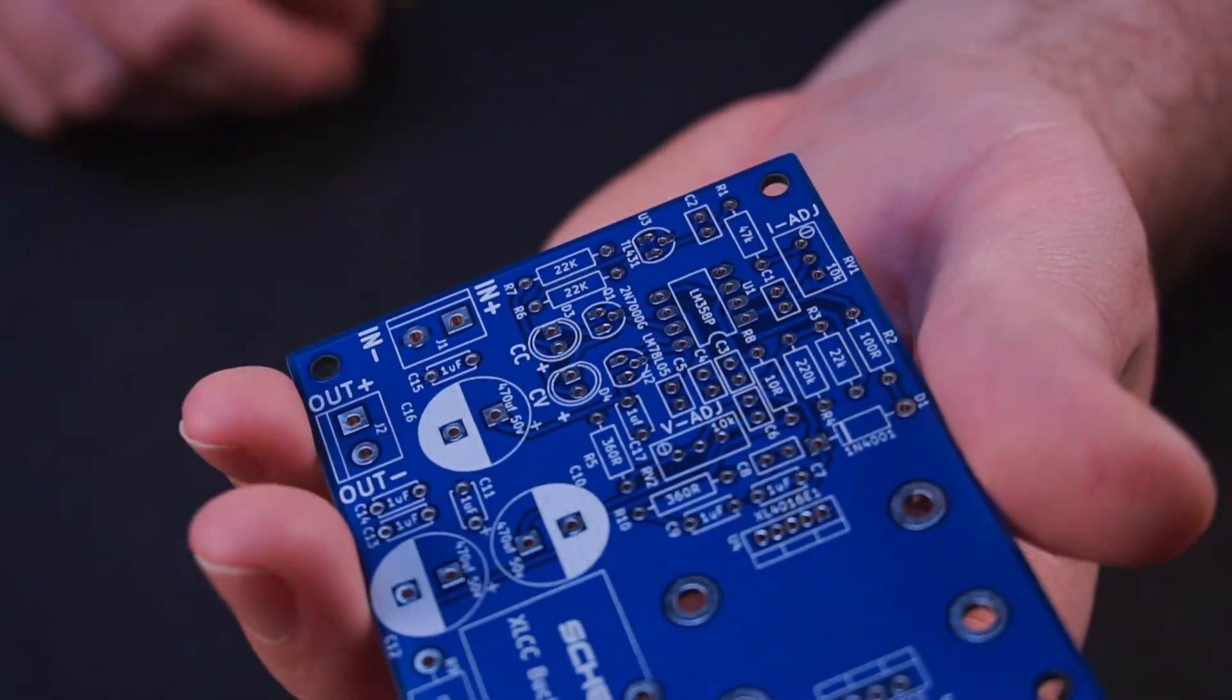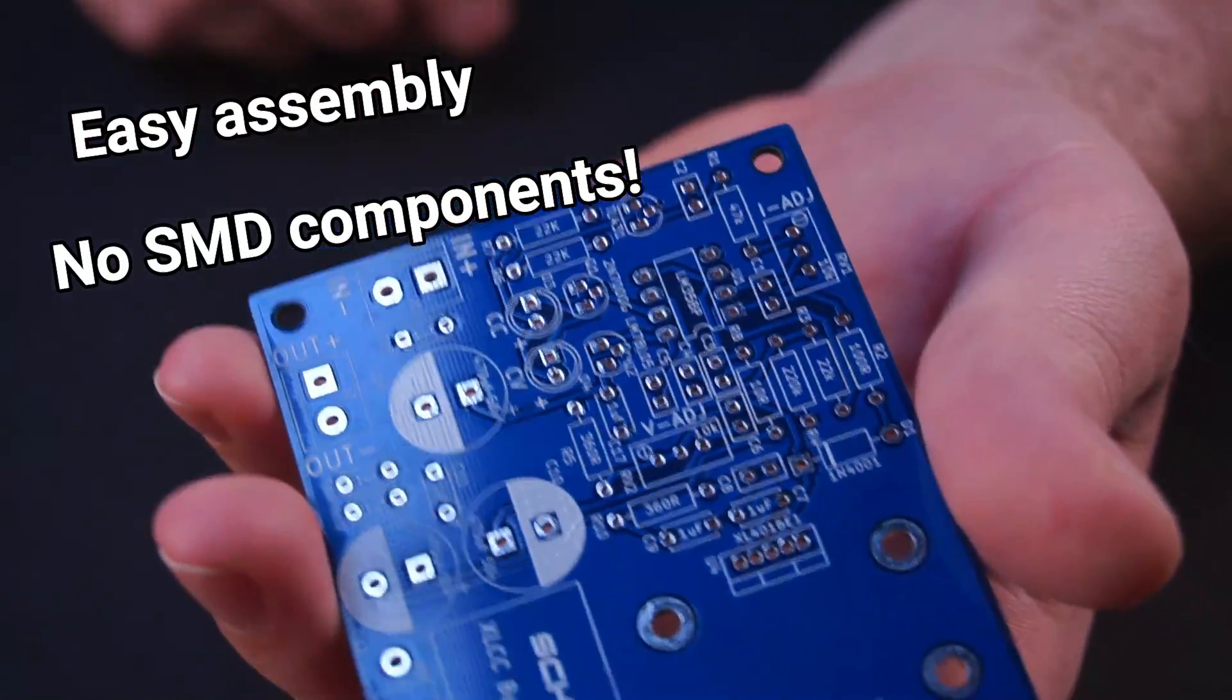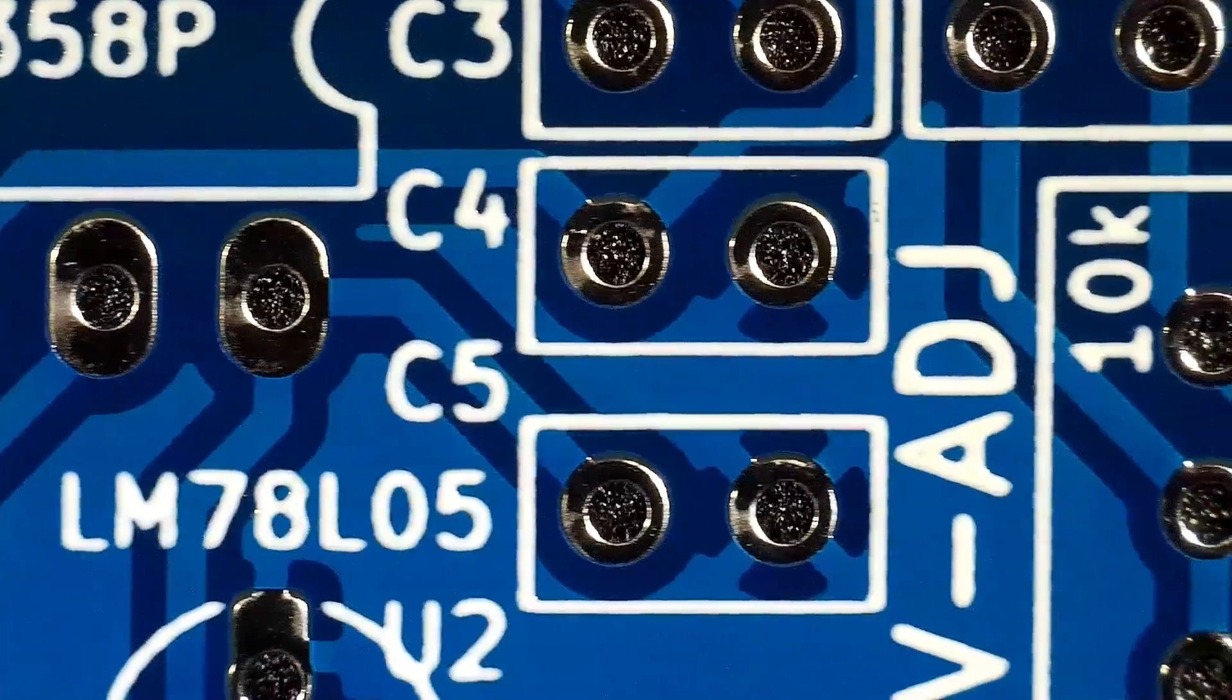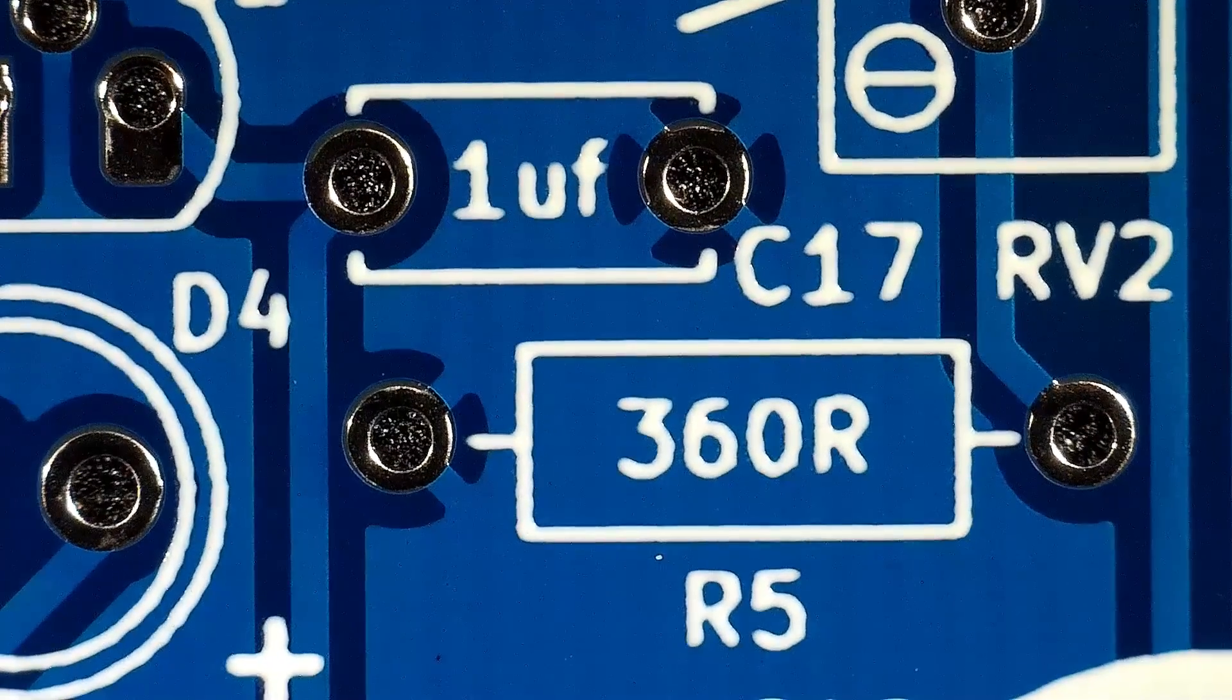To make assembly as easy as possible there are no surface mount components to be found anywhere on the board. What's more the component values are printed right on the board which means there's no need to look up field reference values to identify what component goes where.